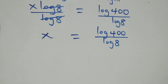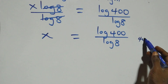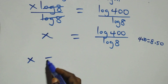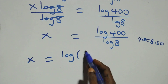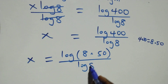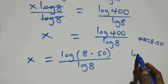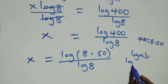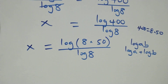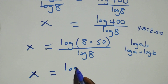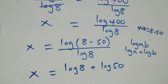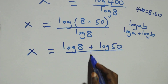Then we can rewrite 400 as 8 times 50. So what we have becomes x equals to log of 8 times 50 over log 8. This follows the product rule of logarithm: when we have log a times b, this is the same as log a plus log b. So x equals to log 8 plus log 50 over log 8.